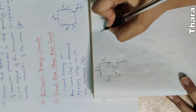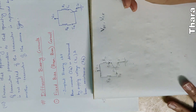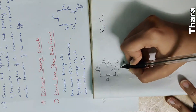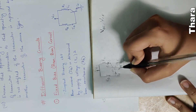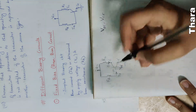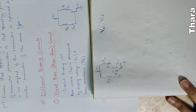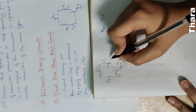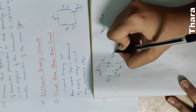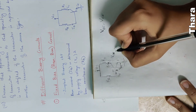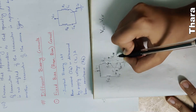We have VBE and VCE. Base-emitter voltage is VBE — B is plus, E is minus. Collector-emitter voltage is VCE — that is the cross voltage. C is plus, E is minus.